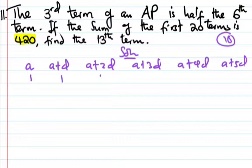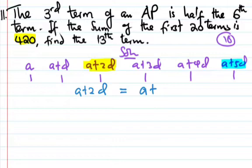So first, second, third, fourth, fifth, this is the sixth. Now the third term, which is this one, is half the sixth term. So the sixth term is this one. A plus 2D is equal to (A plus 5D) divided by 2. That's equation number one.